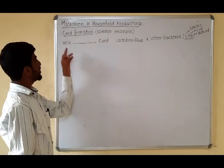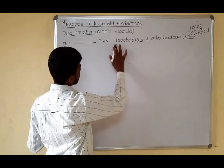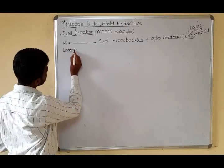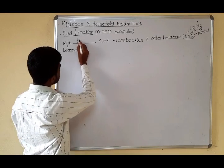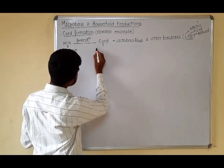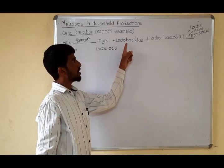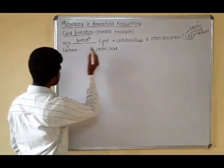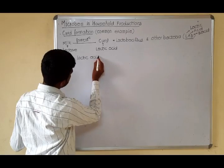To convert milk into curd, lactic acid bacteria are required. The milk contains Lactobacillus which undergoes fermentation, converting into lactic acid by using the enzymes of Lactobacillus and other types of lactic acid-producing bacteria.